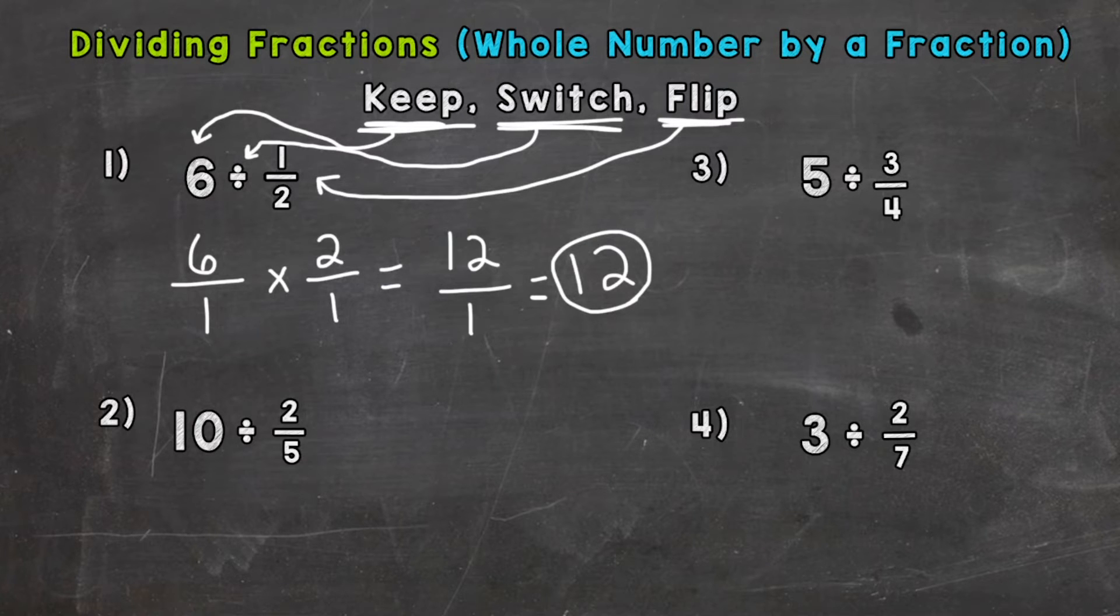Let's take a look at number two now. We have 10 divided by 2/5. So we keep the 10 as 10, value of 10. We just put it over 1, so it has a top and a bottom. Then we switch the division sign to the opposite, which is multiplication. And then the third step is flip. So we have 5/2, or five over two. Now we can multiply straight across.